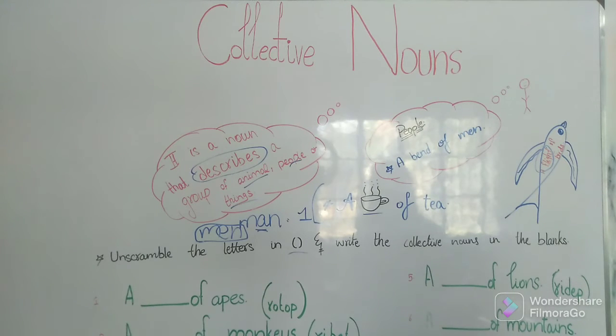So our first sentence is a blank of apes. So this is the word in bracket - R-O-T-O-P. What do you think about it? So basically, a blank of apes, what will suit here the most would be T-R-O-O-P, a troop. What they did - they just gave us spellings and we have to unscramble. They have scrambled all the spellings so that it would be a bit tricky. So you just have to think about it. The word T-R-O-O-P makes troop.